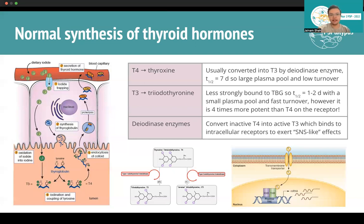In terms of that conversion, the diodinase enzyme is the one that converts T4 to T3. Once converted into T3, the active form, it enters the cells to the intracellular receptor — labeled THR, or thyroid hormone receptor — which initiates some SNS-like effects. Essentially, you have increased rate of metabolism. We've discussed effects on heart rate, digestion, and other things in another lecture.